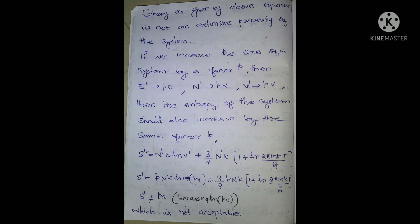The entropy equation is: S = nk log V plus (3/2)nk times [1 plus log(2πmkT / h²)].